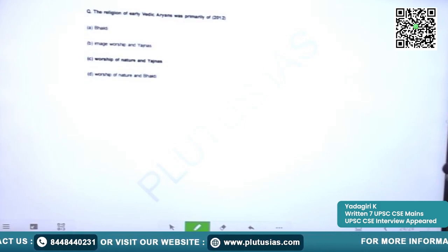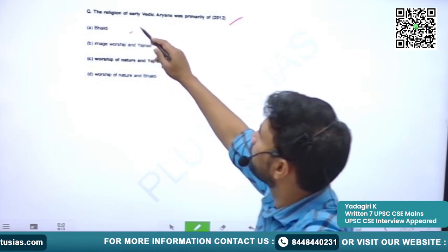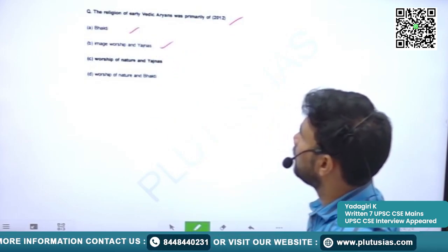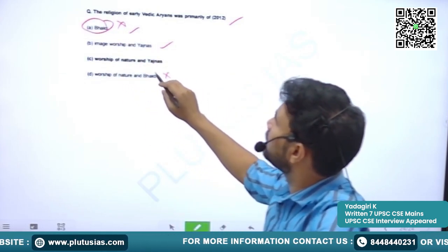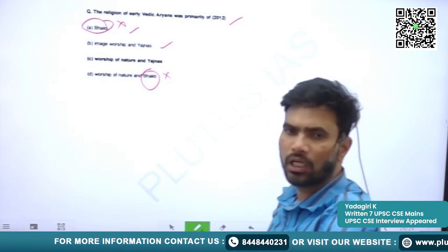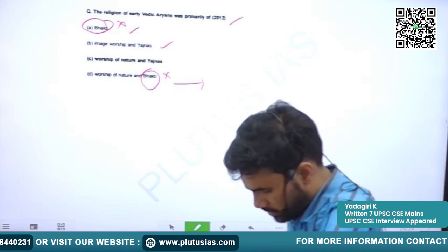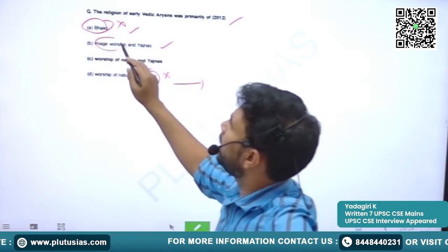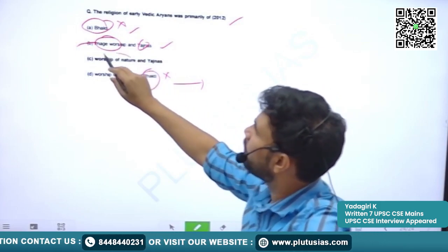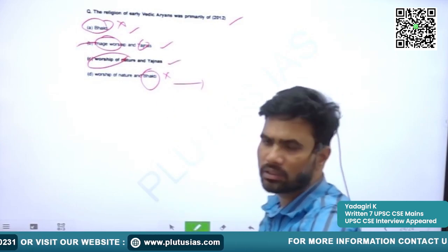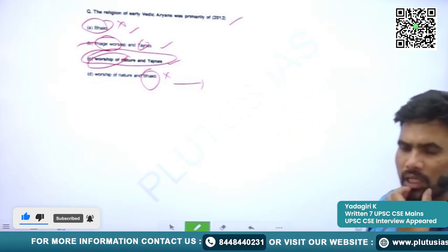The second question, asked in 2012: The religion of early Vedic Aryans was primarily of — options are A) Bhakti, B) image worship and Yagnas, C) worship of nature and Yagnas, D) worship of nature and Bhakti. Bhakti is predominantly a feature of medieval India, not the ancient Vedic period. Image worship was also not there at that time — Yagnas were there but not image worship. Worship of nature-based gods and Yagnas was there. So the correct option is C — worship of nature and Yagnas. This is the religion of the early Vedic people.